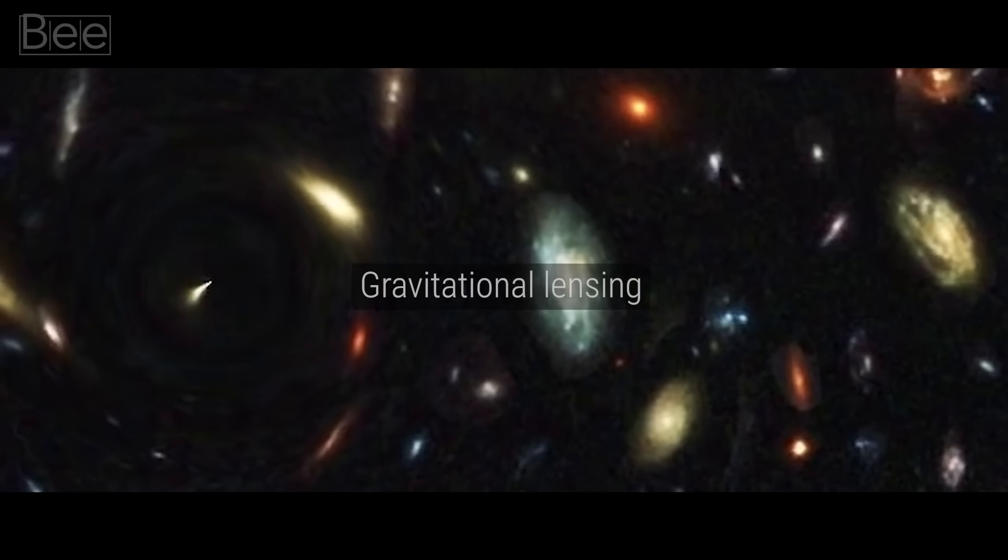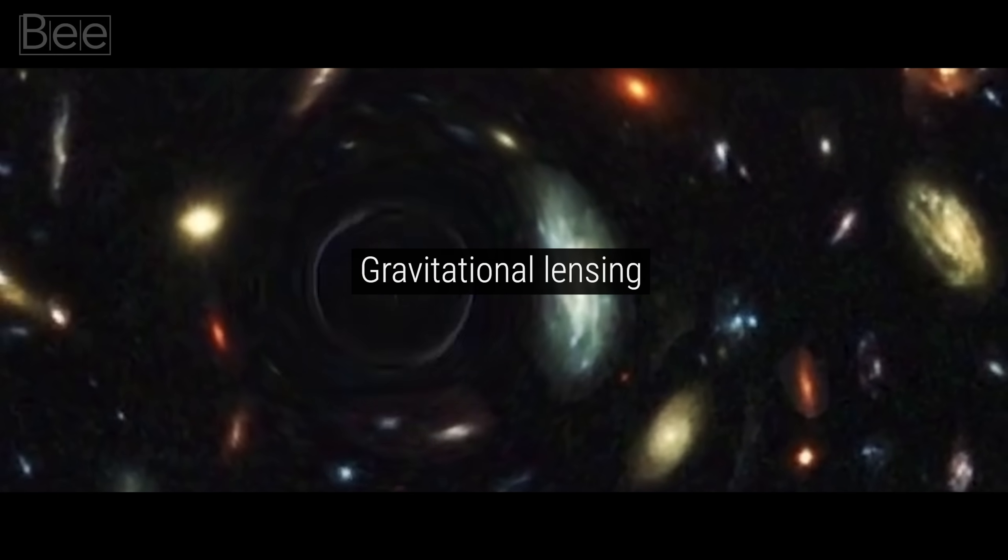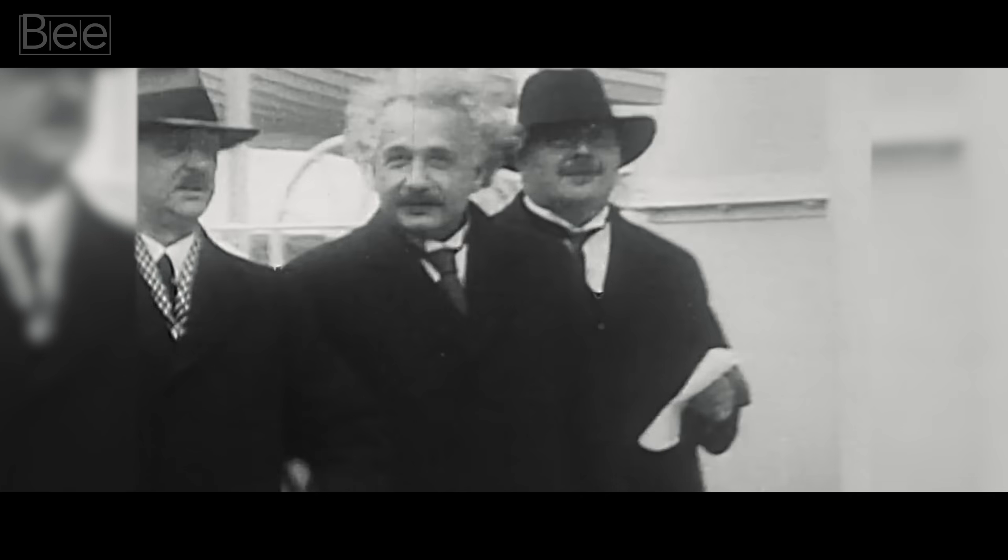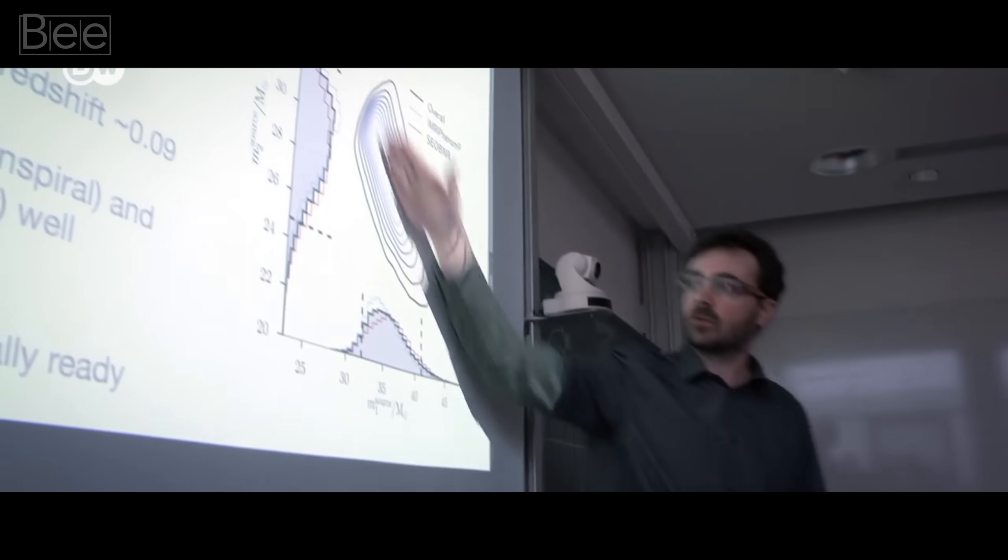That phenomenon is now called the gravitational lensing. This was the first proof of Einstein's theory, and it took the world by storm. Today, we have found lots of evidence that proves his theory. The predictions made by his theory a hundred years ago are now being confirmed today. They have created a new window to look into the universe.